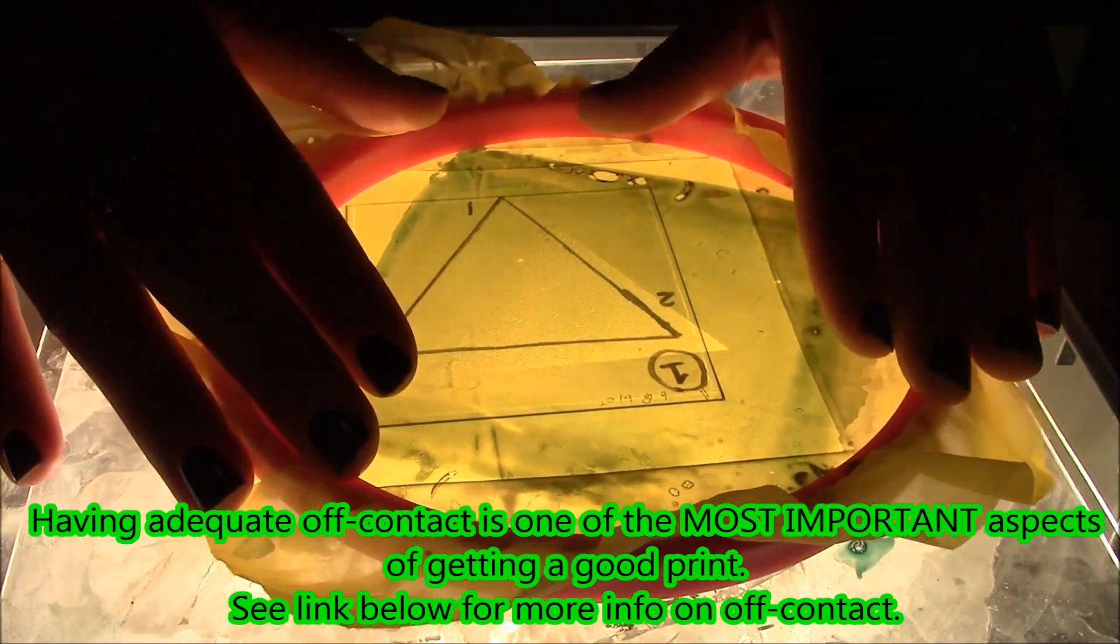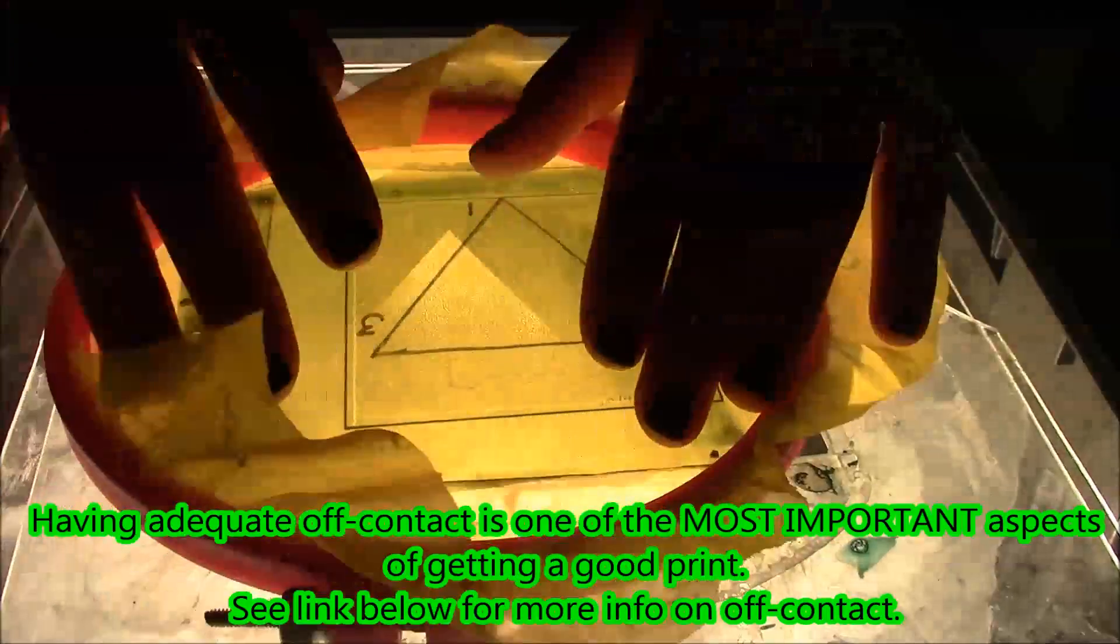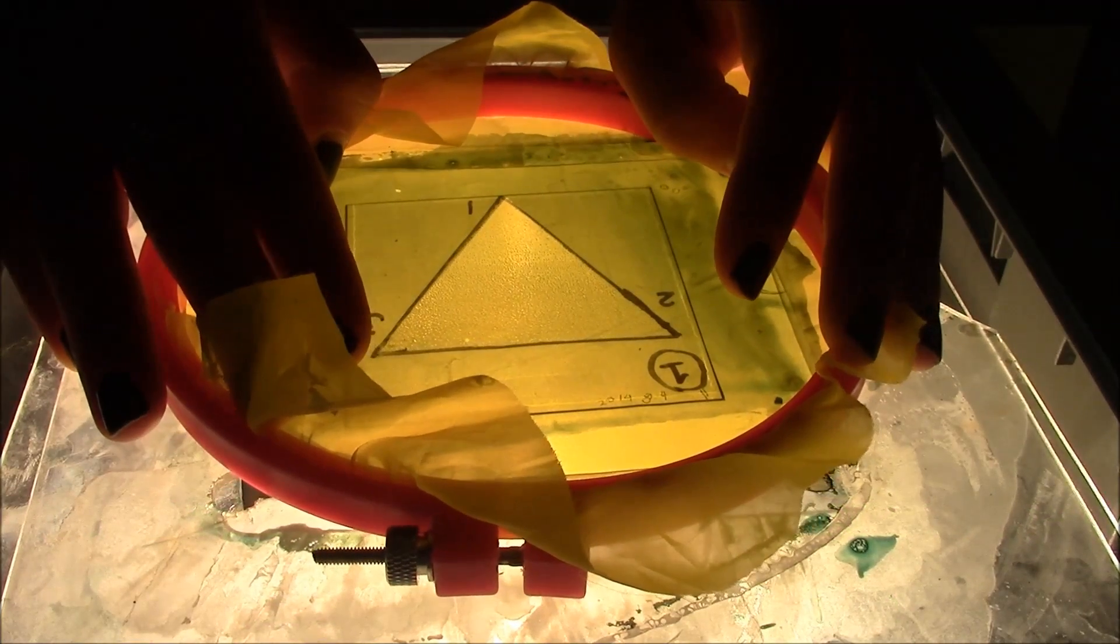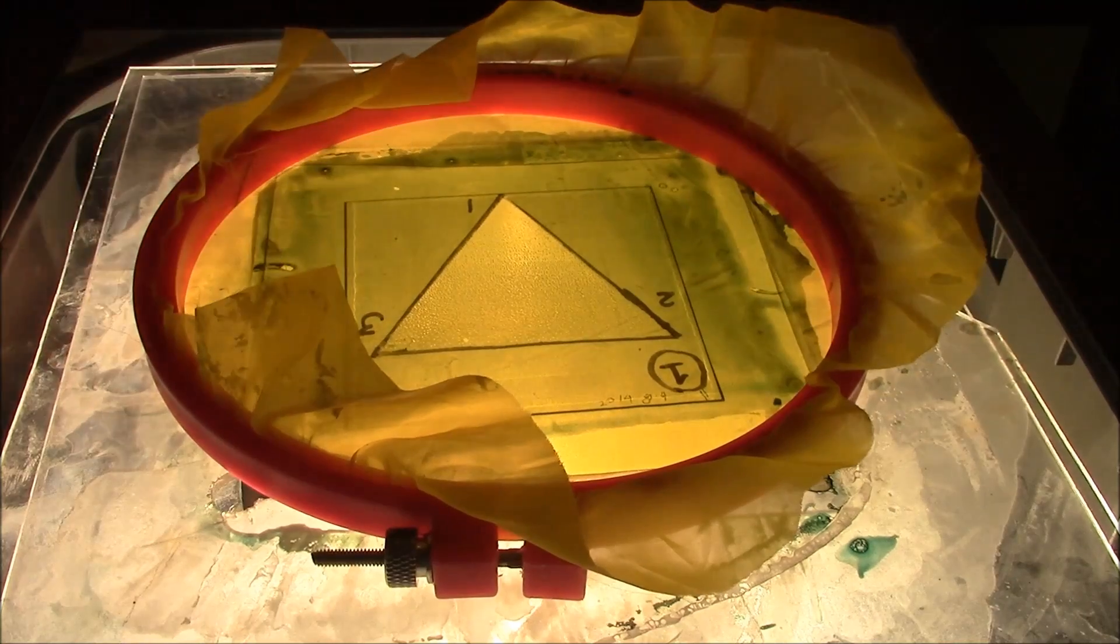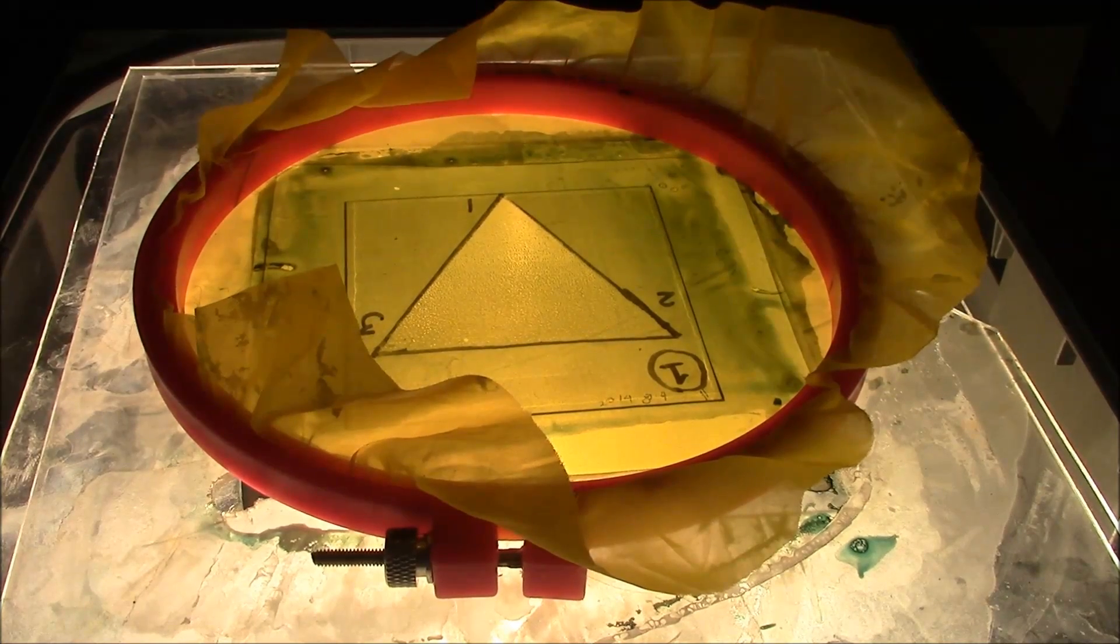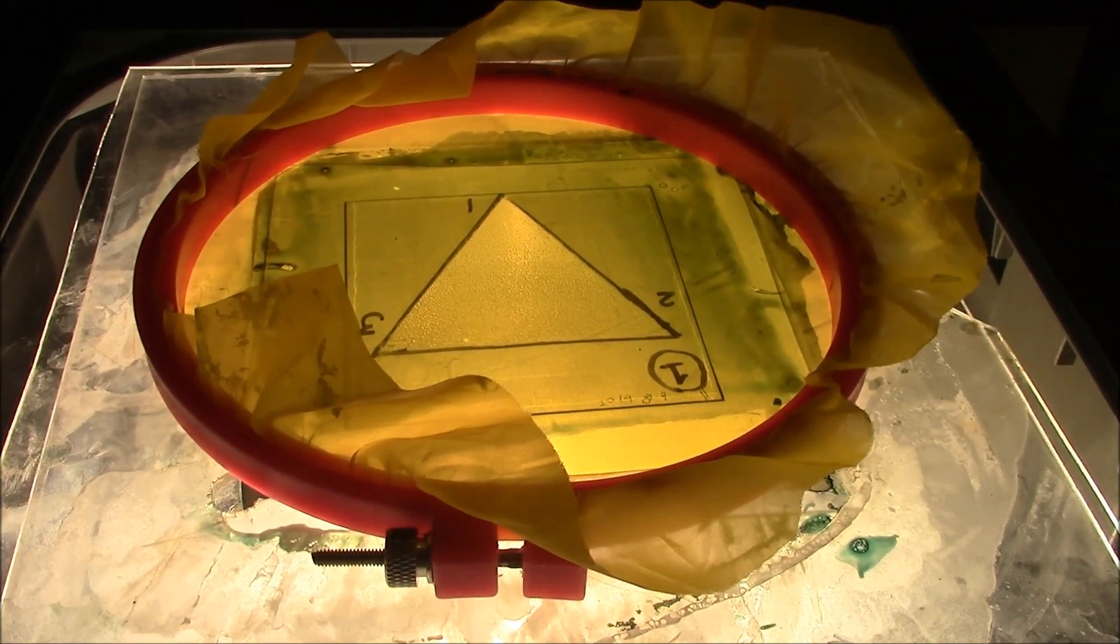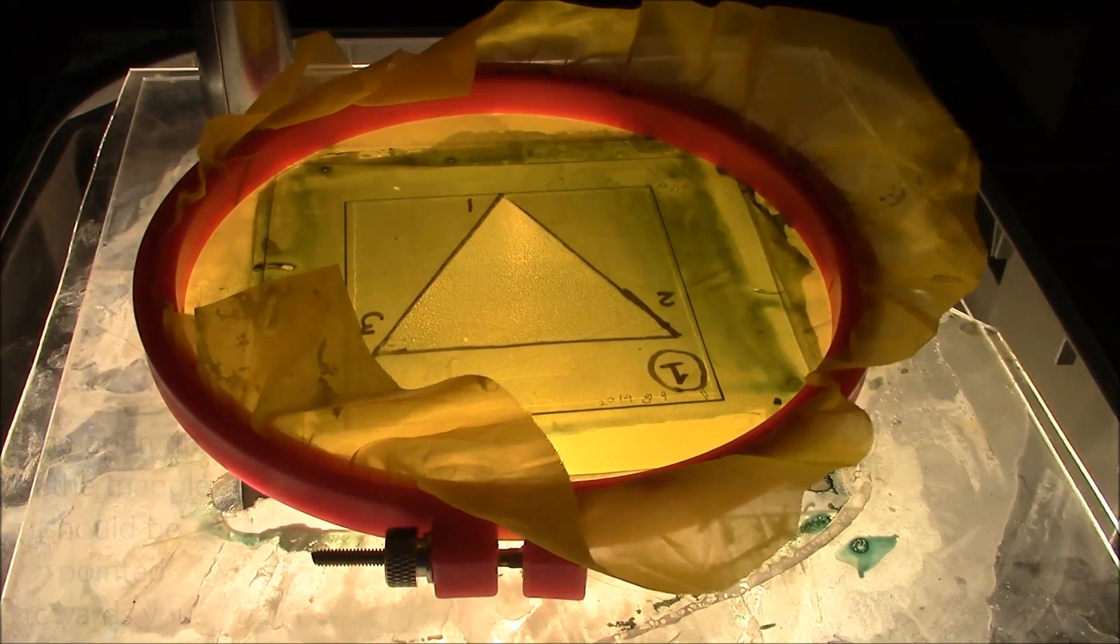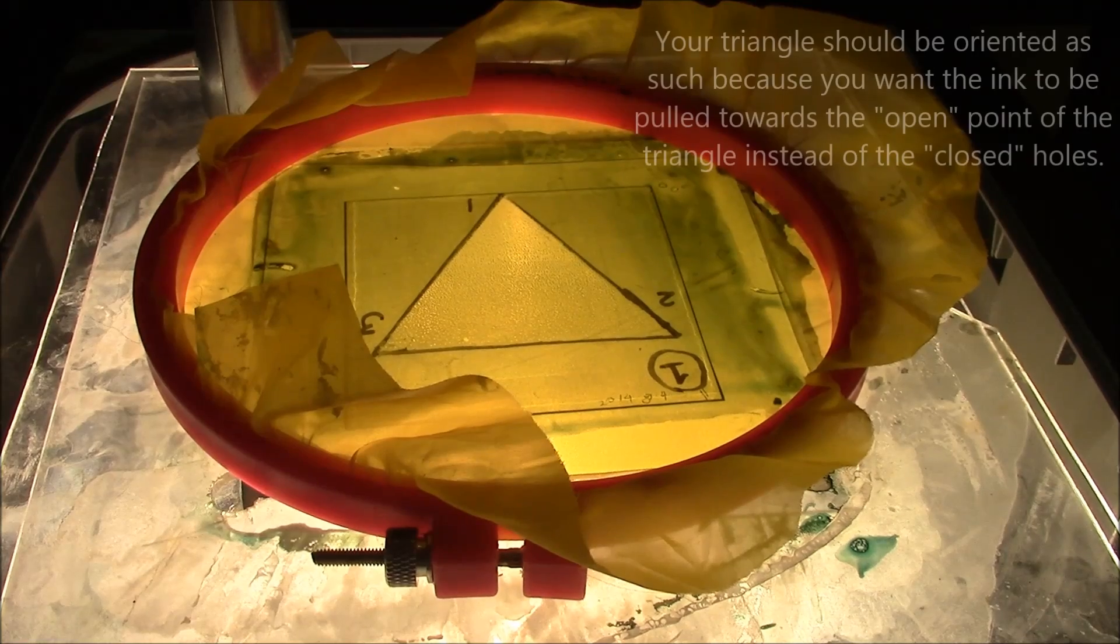This is called off-contact and is a very important aspect of getting the screen to produce a high-quality and accurate print without the ink bleeding. Line up the triangle in the mesh emulsion with the triangle drawn on the glass plate. Having the overhead projector turned on and thus backlighting the glass and screen should help with this process.